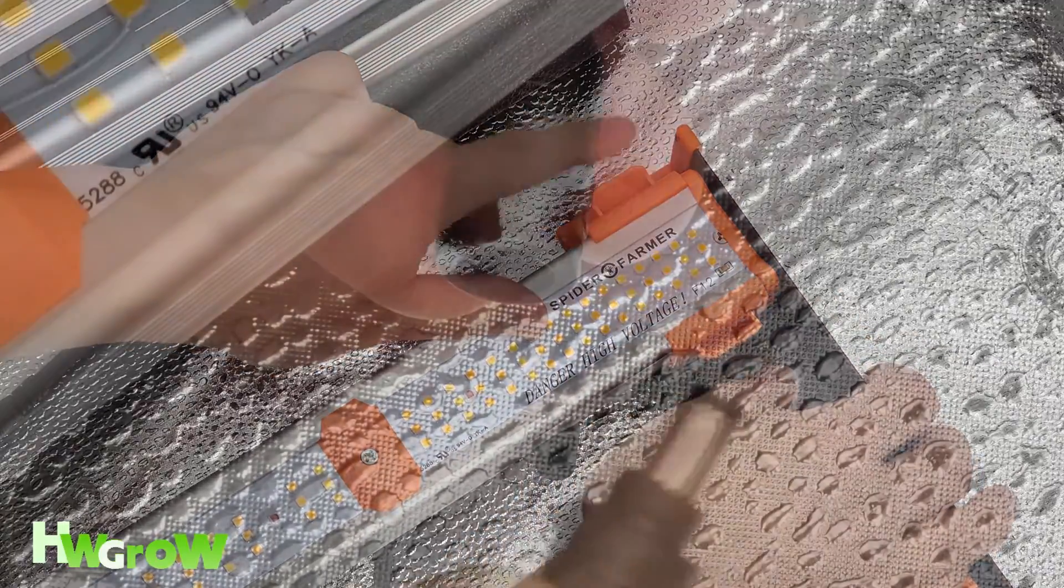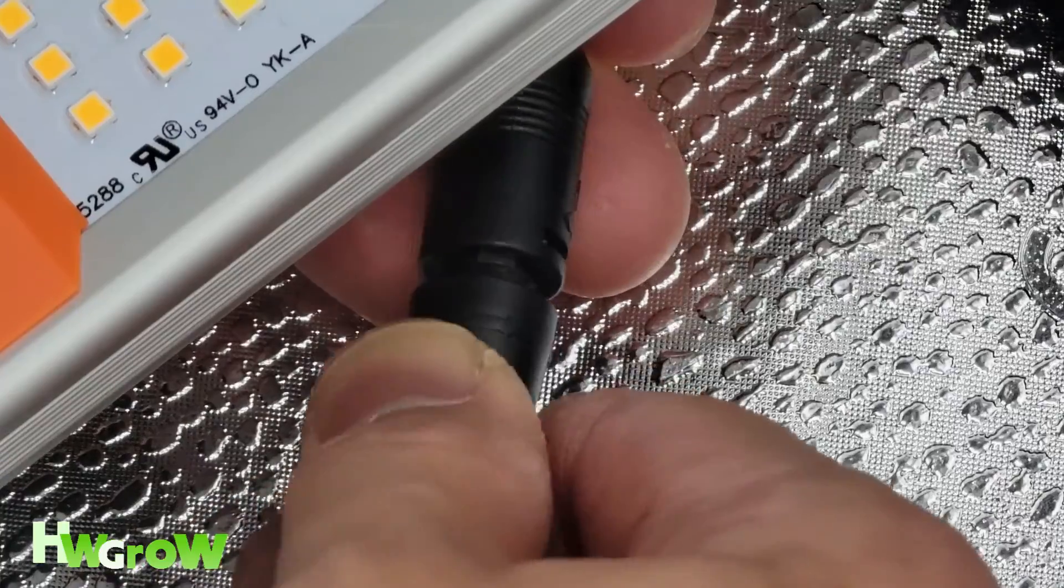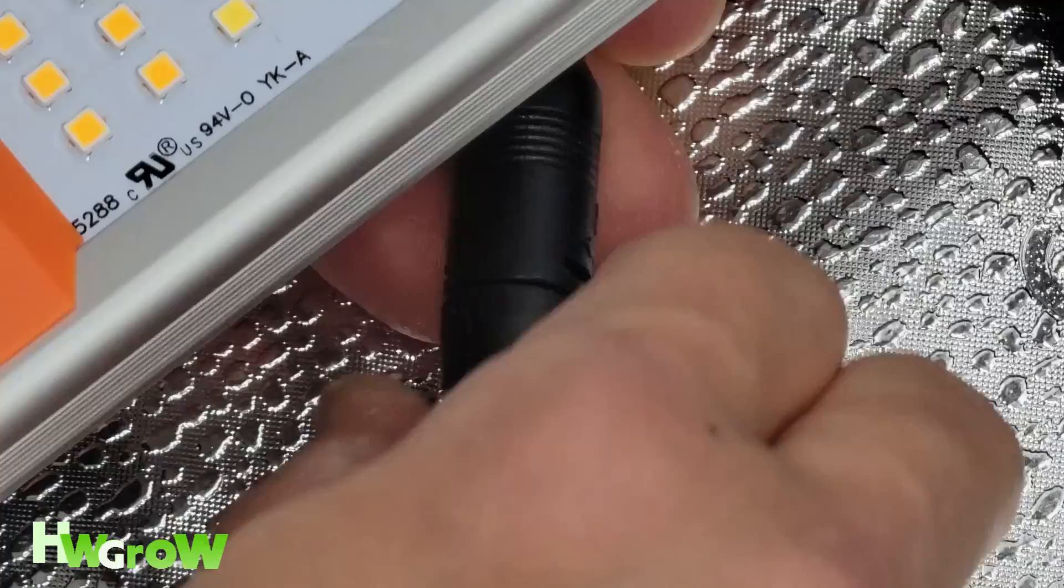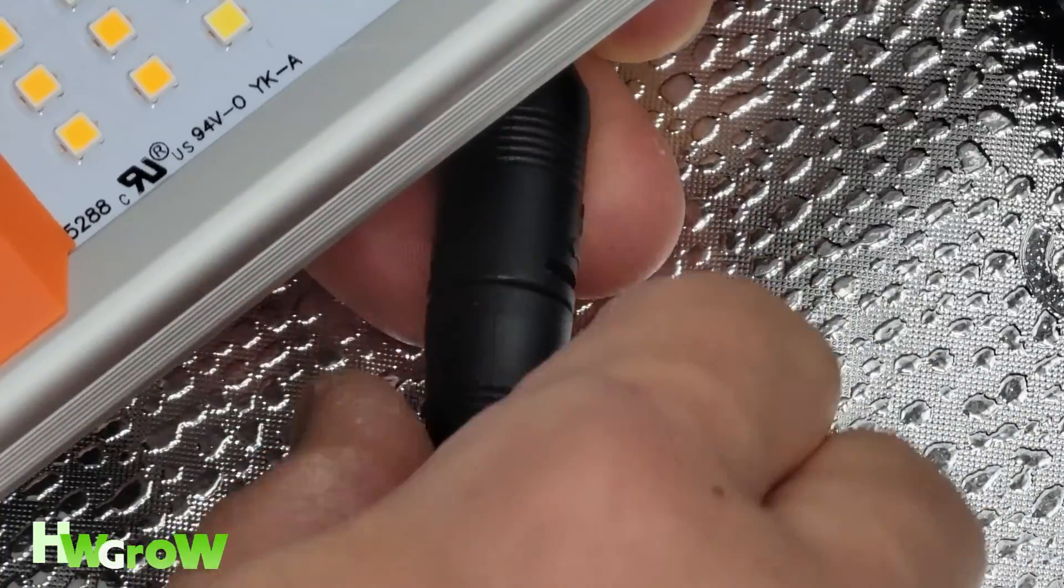When all of the bars are placed in, connect the power by pushing the cable in then twisting it about 90 degrees to secure it in place.